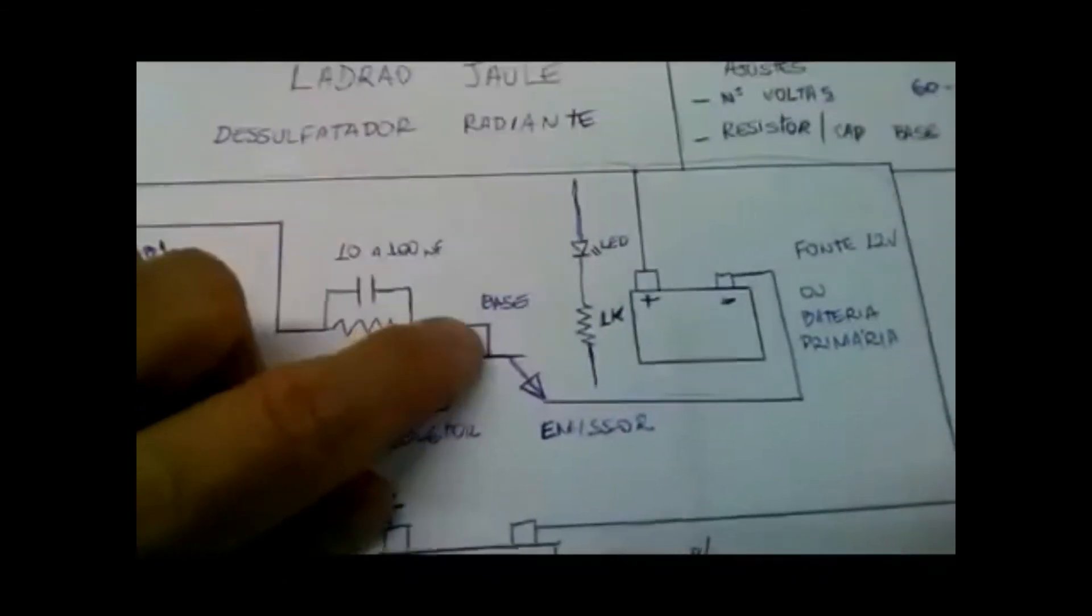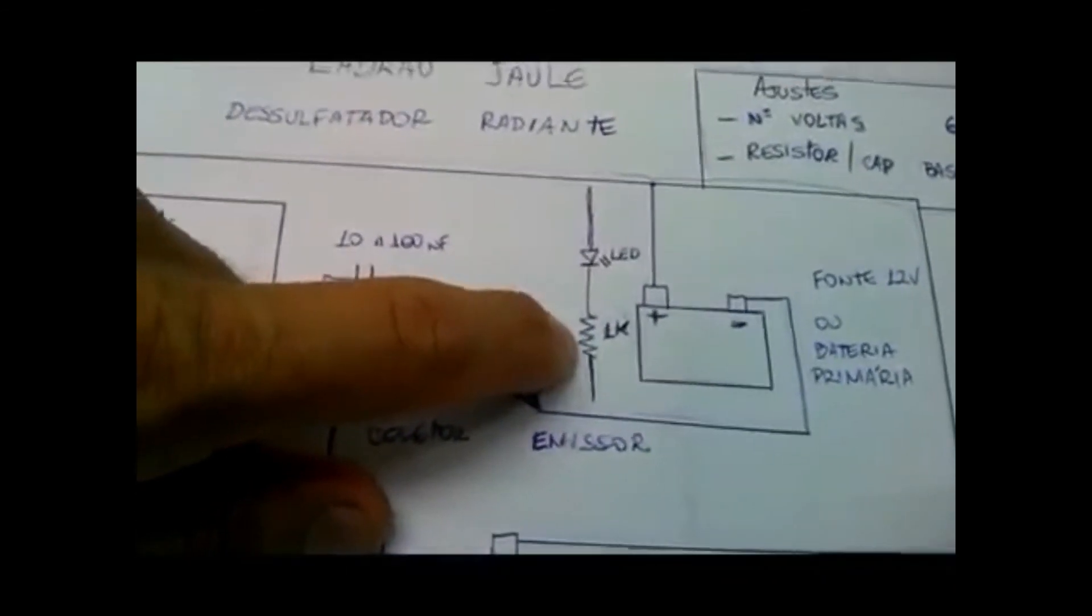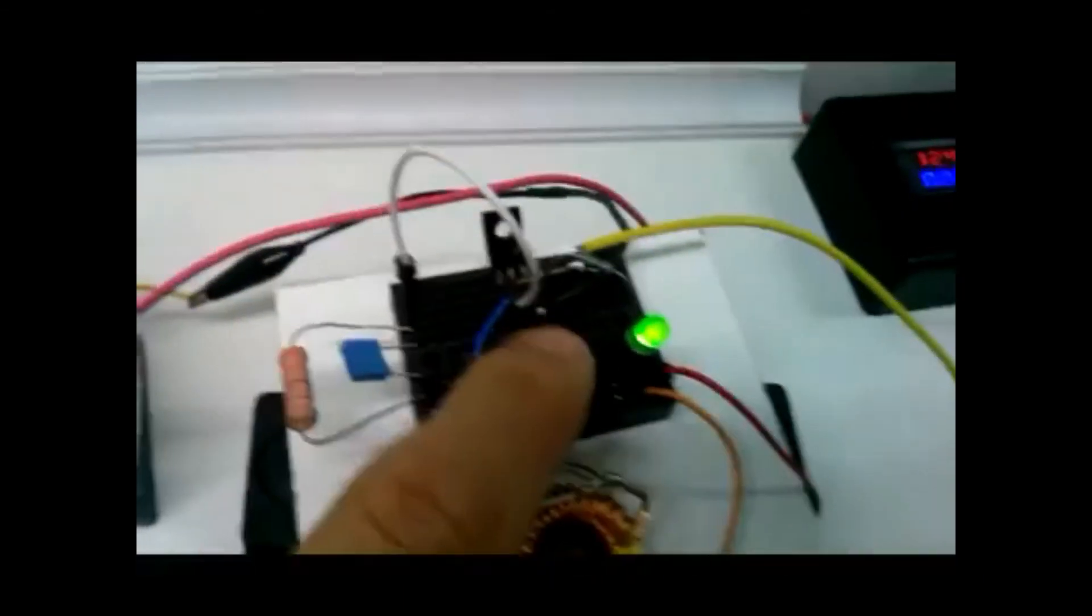If you want, you can add a LED with a 1K resistor to indicate circuit power on.